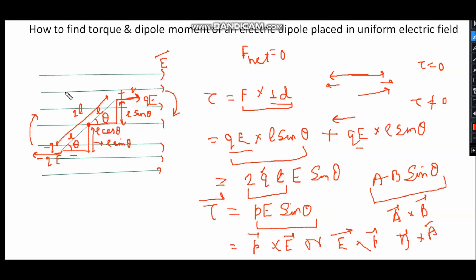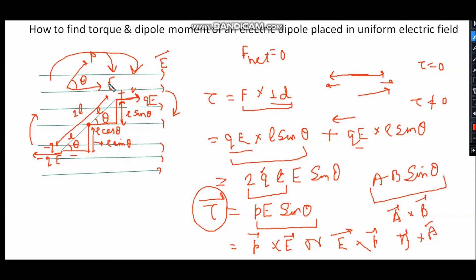For that, this is the direction of the electric field and this is the dipole making angle theta with the electric field. The dipole moment direction is from minus Q to plus Q, and this is angle theta. If we consider P cross E, this gives the clockwise direction, and we know our torque is acting in the clockwise direction on the dipole. So P cross E is clockwise and E cross P is anticlockwise. Therefore, the torque acting on the dipole is P cross E.